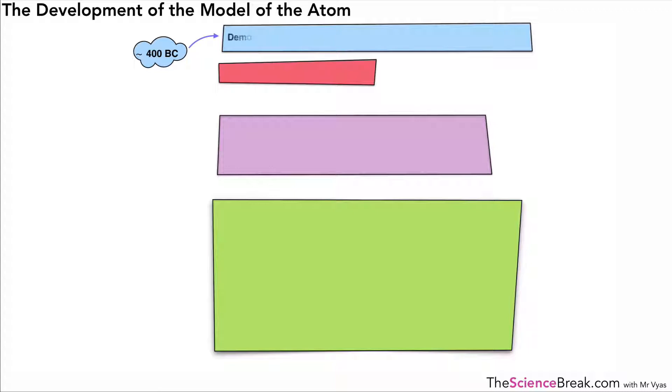A good point to start would probably be around 400 BC when a Greek philosopher called Democritus. He was the person that coined the phrase atom, which means indivisible or can't be broken down, and he was the first one to really talk about atoms.